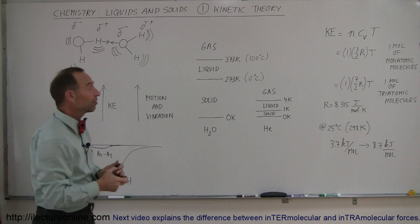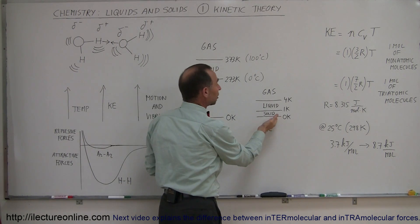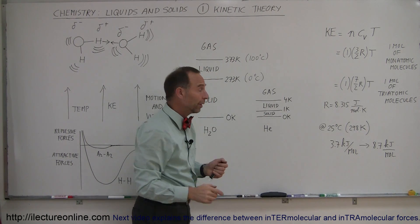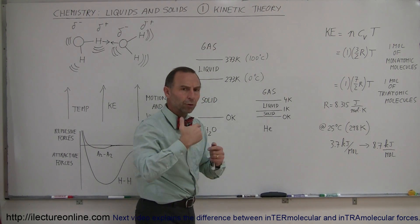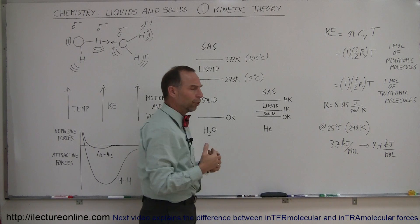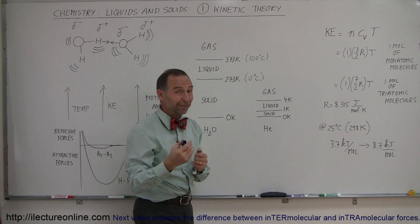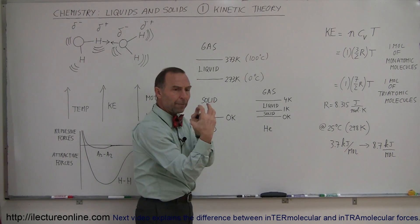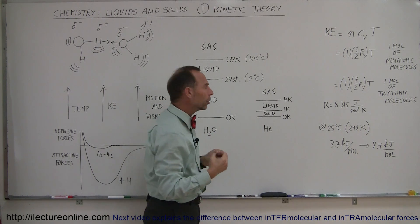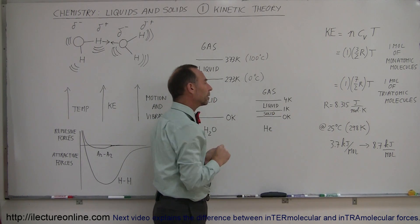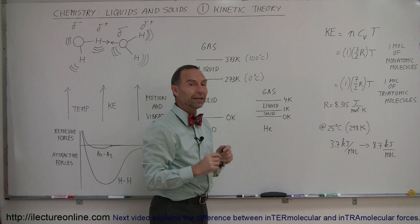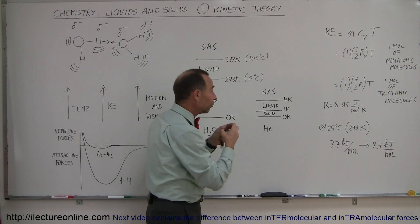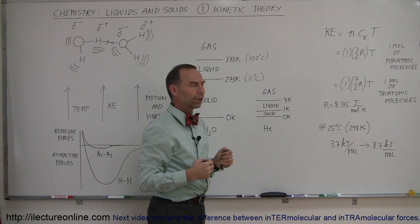For helium, it will be solid from absolute zero to only one degree above absolute zero. At that point, the thermal agitation — even at one degree Kelvin — is enough to break up the forces holding helium together and turn it into a liquid. Then at four degrees Kelvin, the thermal agitation is sufficient to turn helium into a gas.